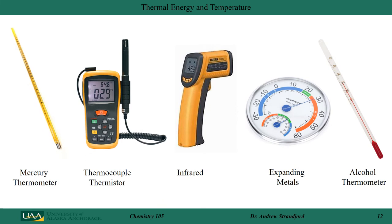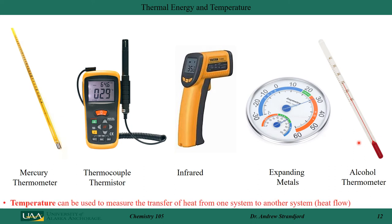When measuring temperature we use thermometers, thermocouples, thermistors, and even devices that measure temperature using infrared radiation. Some backyard thermometers are based on expanding metals. In the chemistry laboratory we often use alcohol thermometers to measure changes in temperature, which we can relate to changes in energy. Temperature can be used to measure the transfer of heat from one system to another as something gains or loses energy — we call that heat flow.